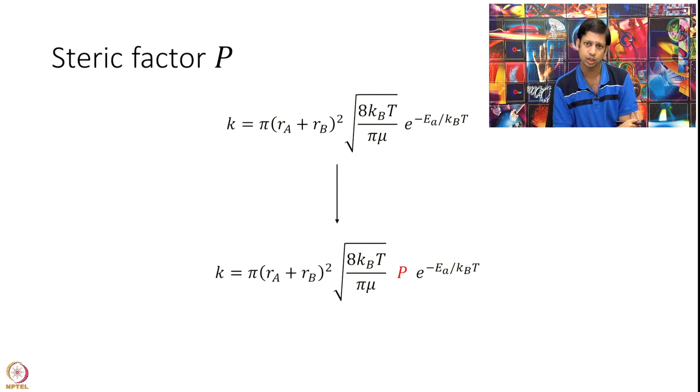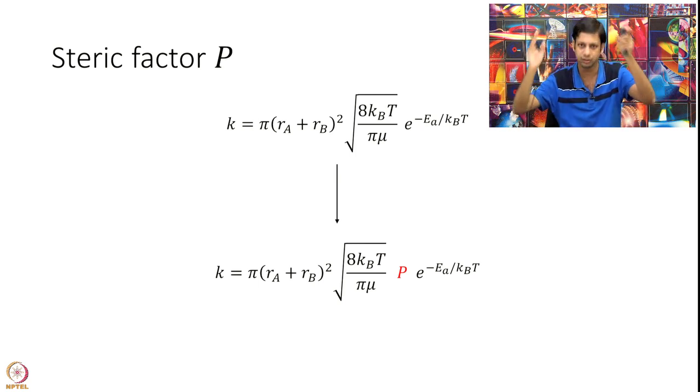One way people try to improve upon this is by introducing what is called the steric factor. This is an ad hoc factor. We just say that our collision rate looks like this - this is what we derived - but to get it right, you must multiply it by this P. P is a number that you can calculate experimentally. P is usually not dependent on temperature, so that's the advantage. At one temperature perhaps you calculate this P as the measured rate versus the collision theory rate and find the ratio. Then you can use the same P for different temperatures. That's one way of correcting it, but it's not very satisfactory because it's ad hoc, not from an atomistic perspective which has been our aim.